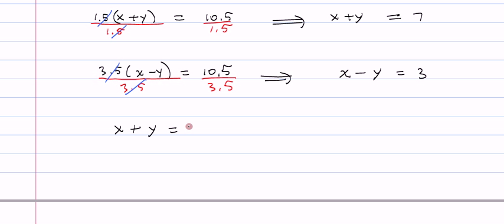x plus y is equal to 7, x minus y is equal to 3. And we'll use substitution, so we can solve this equation for y, which means I'm going to do that by subtracting x from both sides. So I get y is equal to 7 minus x.